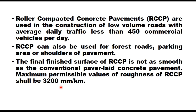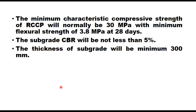The design of RCC, that is roller compacted concrete, is based on compressive strength and flexural strength. Minimum characteristic compressive strength should normally be 30 MPa and minimum flexural strength should be 3.8 MPa at 28 days. The subgrade CBR should not be less than 5 percent, and thickness of subgrade will be minimum 300 millimeters, as generally taken for low volume roads.